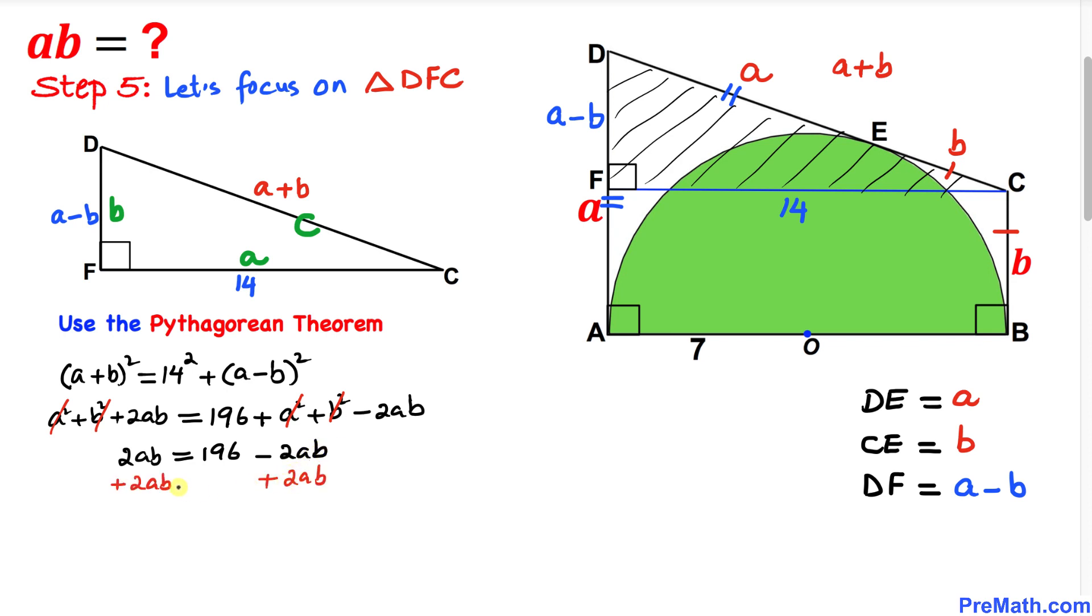Now let's add 2ab to both sides. We end up with 4ab = 196, so our ab value turns out to be 49.